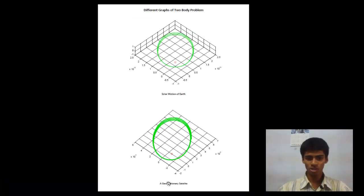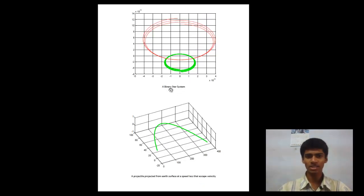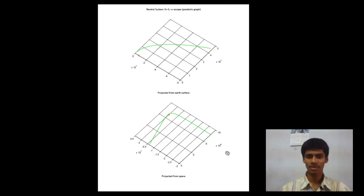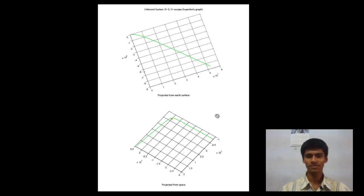The solar motion, the geostationary satellite, the binary star system, a projectile projected from Earth's surface, the bound system, the neutral system, and the unbound system. All these trajectories are correctly predicted as it was shown before.